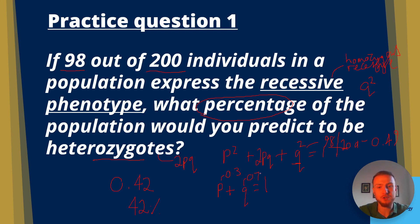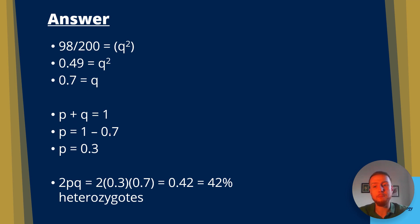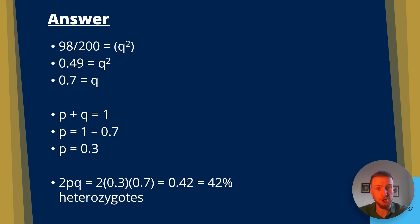To recap: 98 divided by 200 gives Q squared equals 0.49, so Q equals 0.7. P plus Q equals 1, so P equals 1 minus 0.7 equals 0.3. Therefore 2PQ is 2 times 0.3 times 0.7, which gives us 0.42 — or 42% heterozygotes.